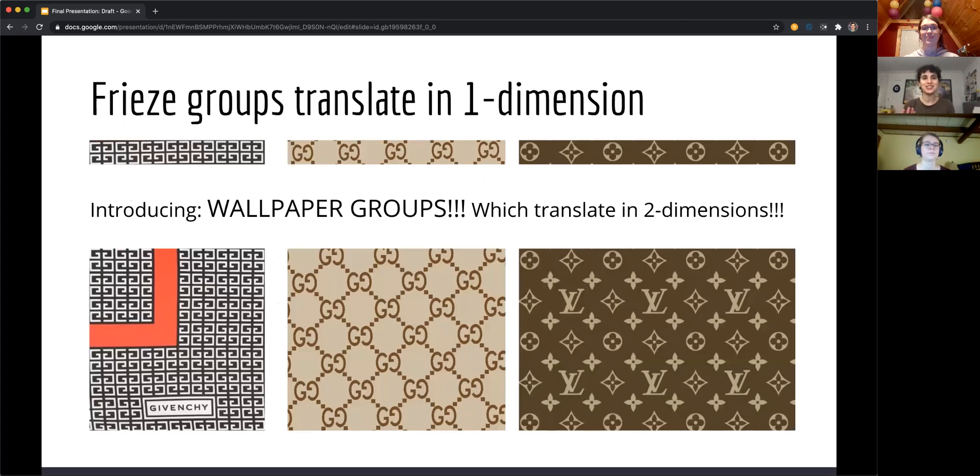So now that we see that frieze groups translate in one dimension, we can level up to wallpaper groups, which translate in two dimensions. And as you can see on this designer fabric, the logo extends in both the X and Y dimensions.